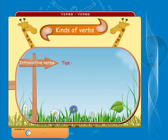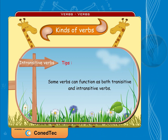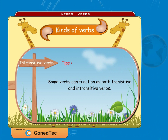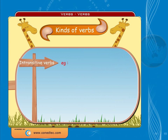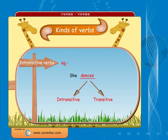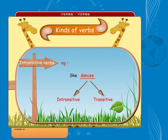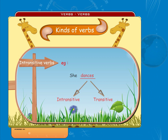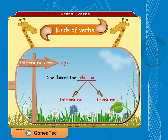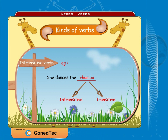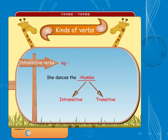Tip: some words can function as both transitive and intransitive verbs. For example, in 'She dances,' 'dances' is an intransitive verb. But in 'She dances the rumba,' 'dances' acts as a transitive verb.